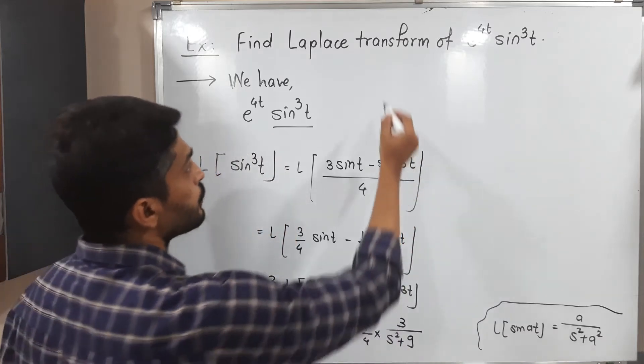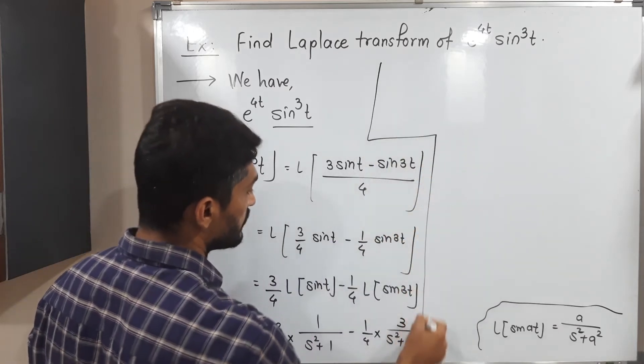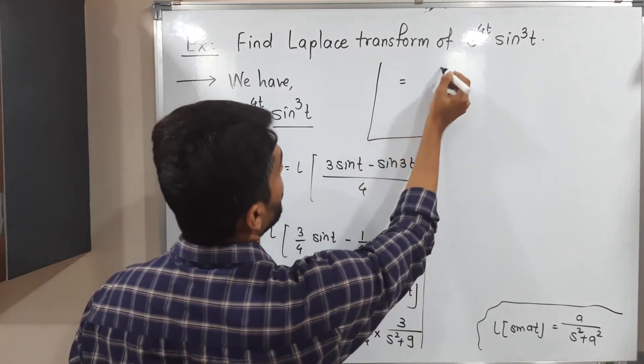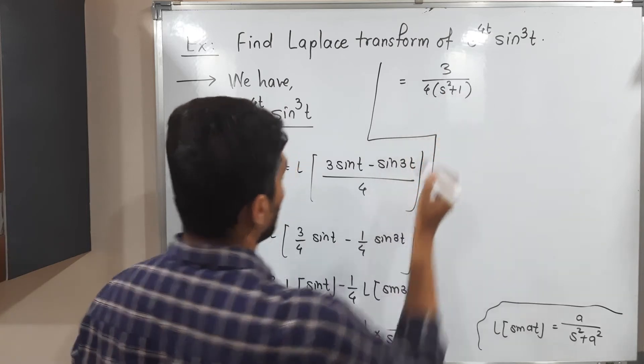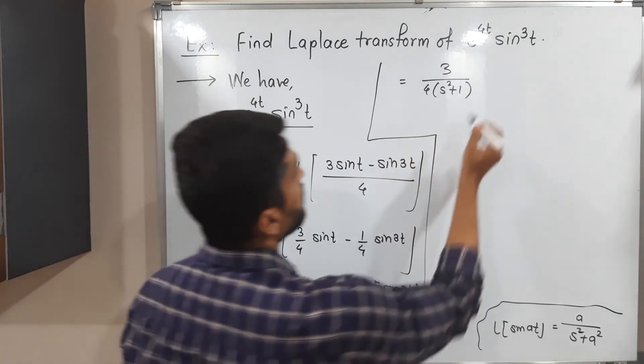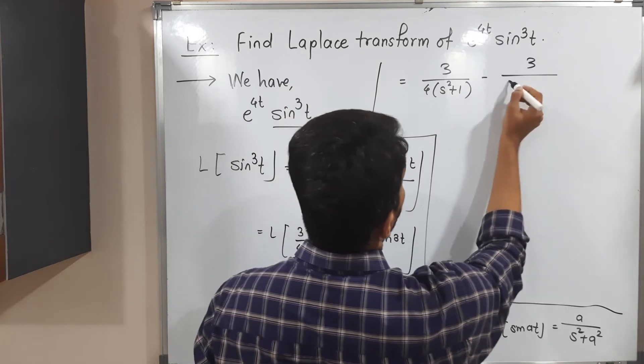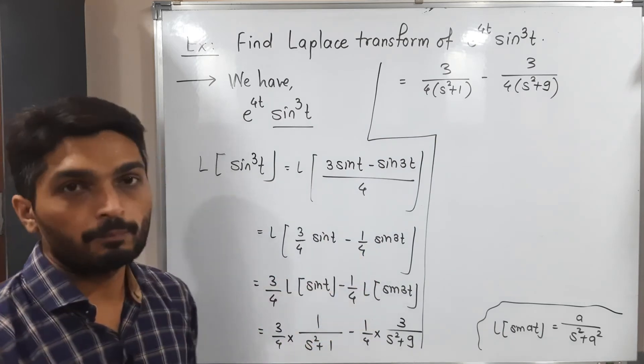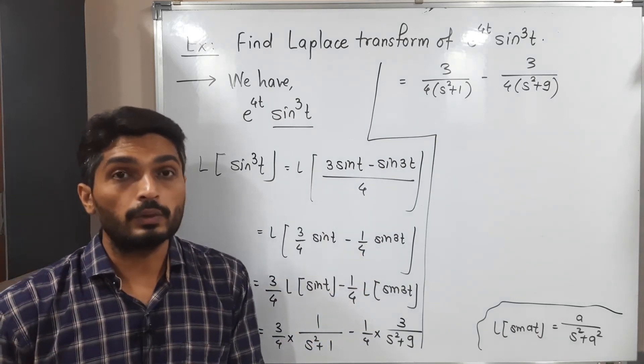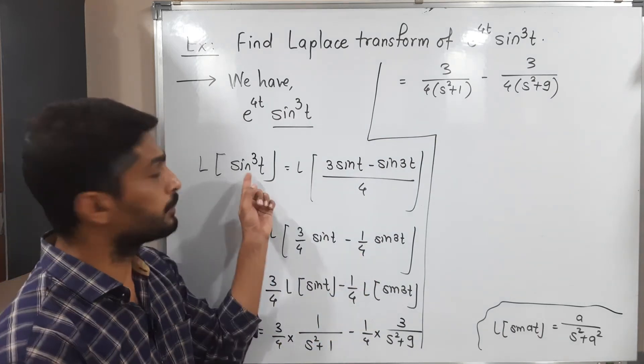So let me write it properly. So this is equal to 3/4(s^2 + 1) minus 3/4(s^2 + 9). So this thing we have. So in this way, we found out the Laplace transform of sin cube t.